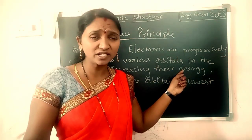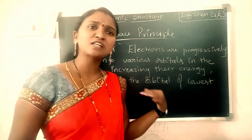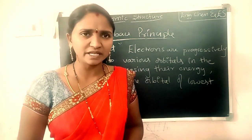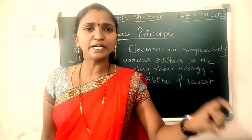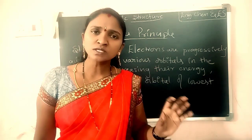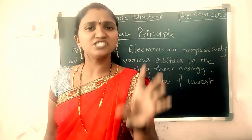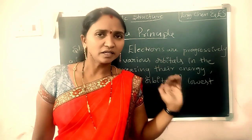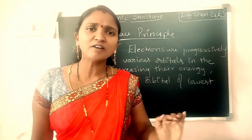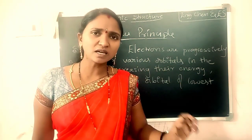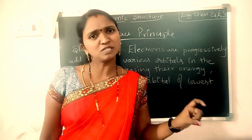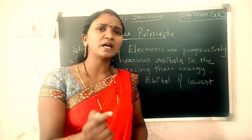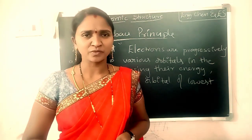So electrons are progressively added into orbitals in increasing order of their energy, starting with the orbital of lowest energy. This means the first electron will enter into the lowest energy orbital.